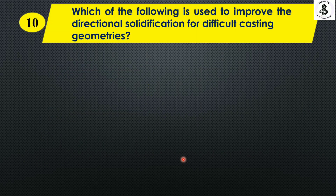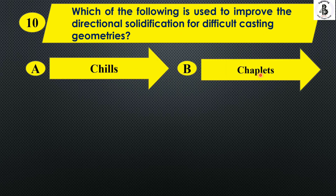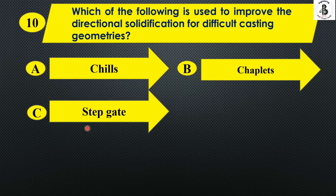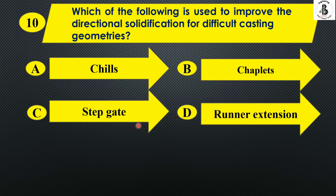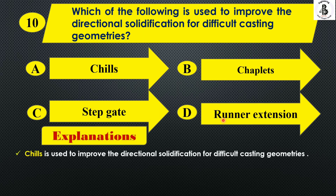Which of the following is used to improve directional solidification for difficult casting geometries? Option A chills, Option B chaplets, Option C step gate, and Option D runner extensions. For improvement of directional solidification for complex or difficult casting geometries, chills are used. The right answer is Option A.